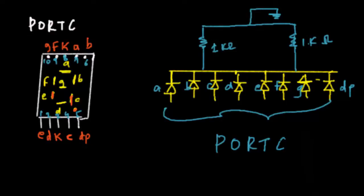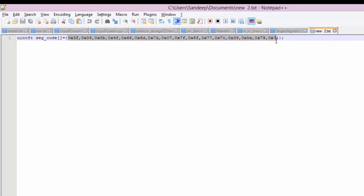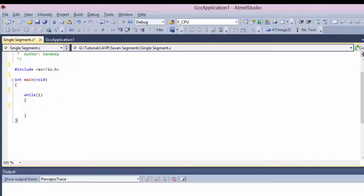Now let's write the code. Since we're displaying digits zero to nine and A through F, we'll store all the segment patterns in an array of 16 entries — already calculated — and then cycle through the array using a loop. Each digit will be displayed with a one-second delay before moving to the next, cycling from zero through nine and then the hex digits.